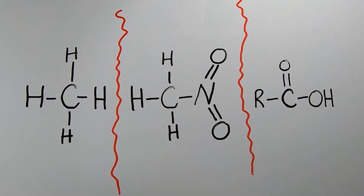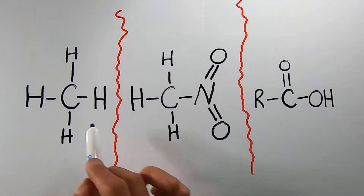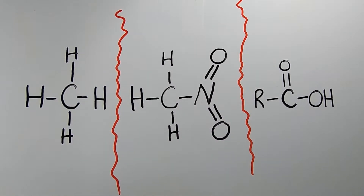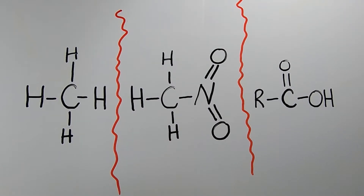Now let's compare three different molecules — some with functional groups, some without — to talk about shielding, deshielding, upfield, and downfield on the HNMR spectrum graph. Then we'll see where these lie in chemical shift and ppm on the graph.